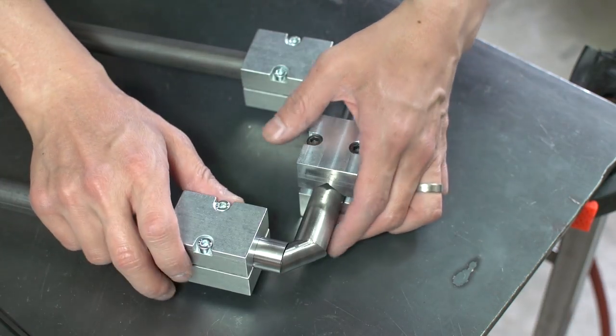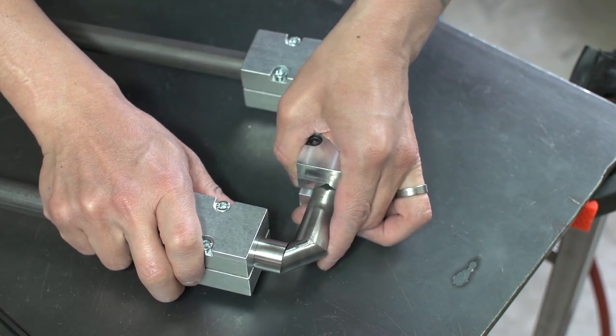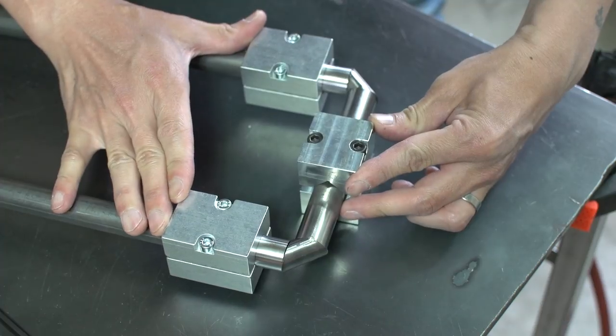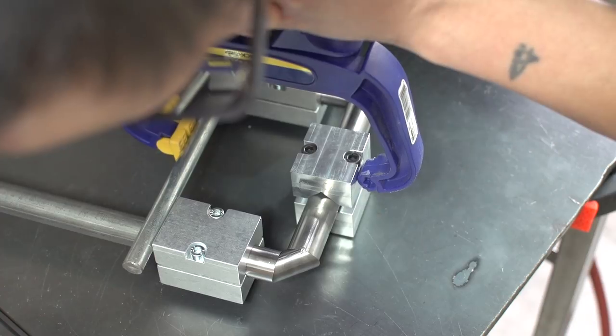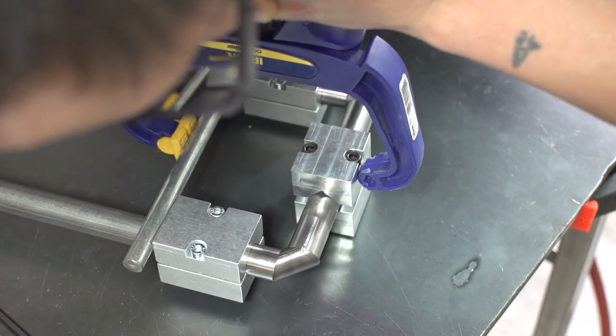After tacking one side, it pulled open a gap on the other side. So to close the gap I used some two-by blocks and clamped the gap closed just long enough to get some tacks in place.